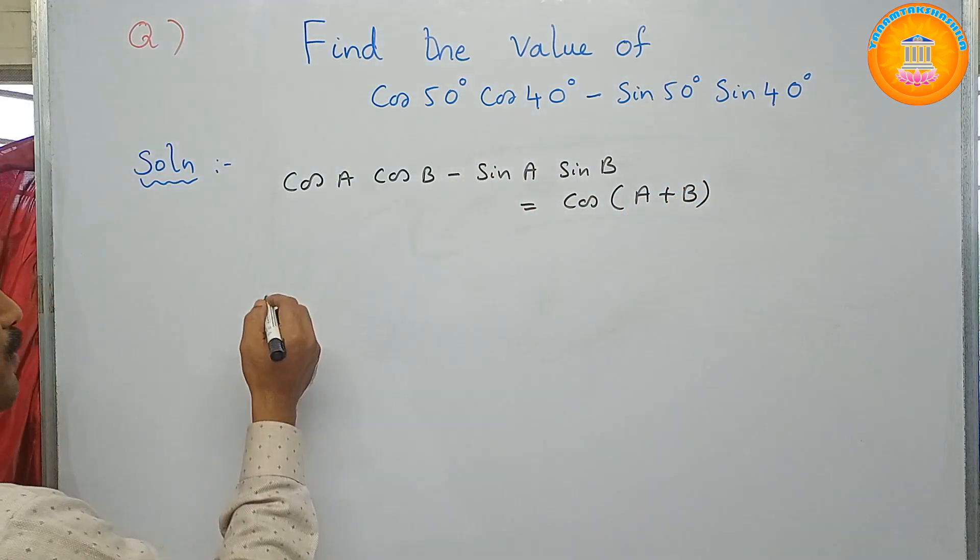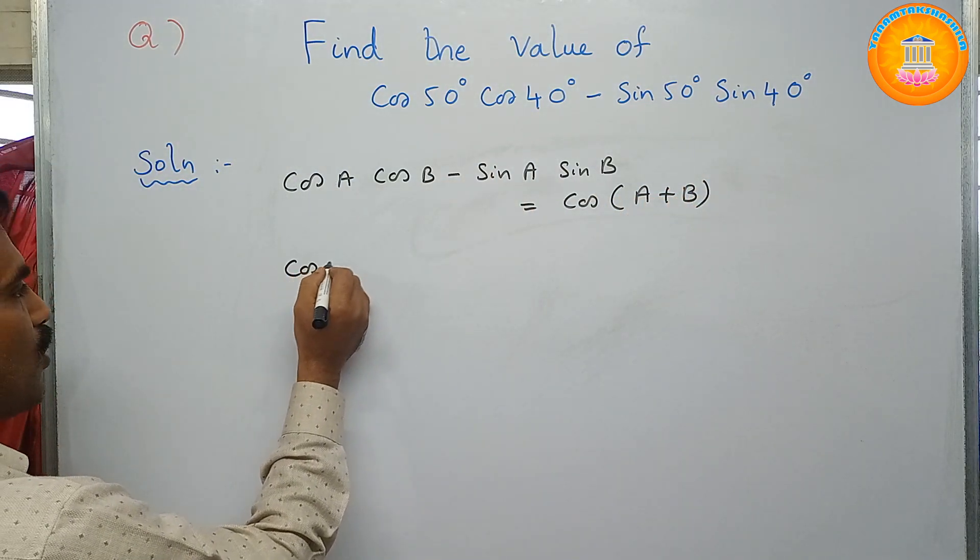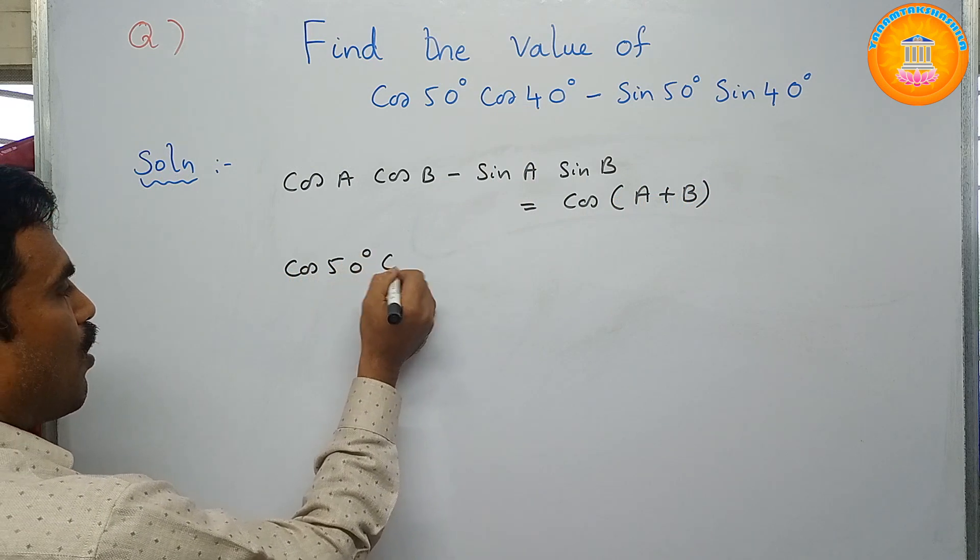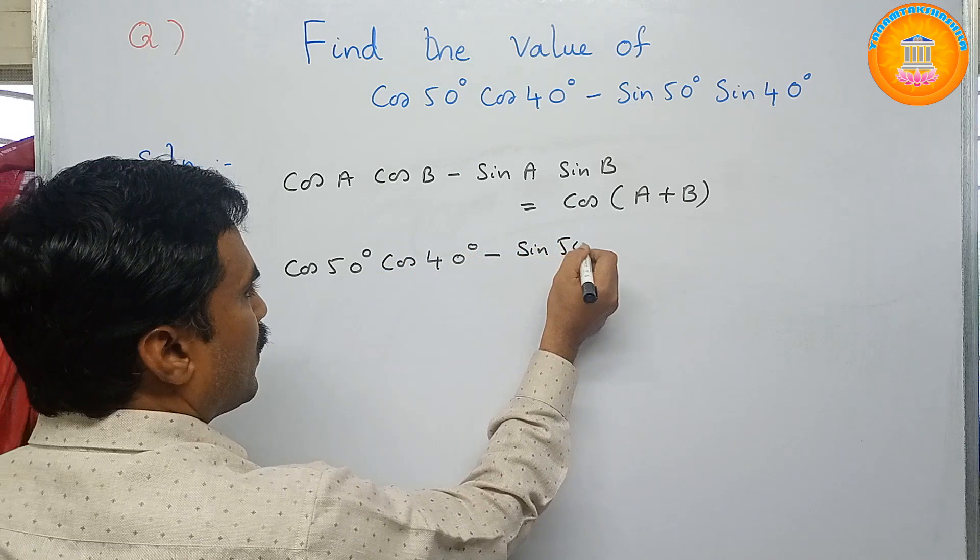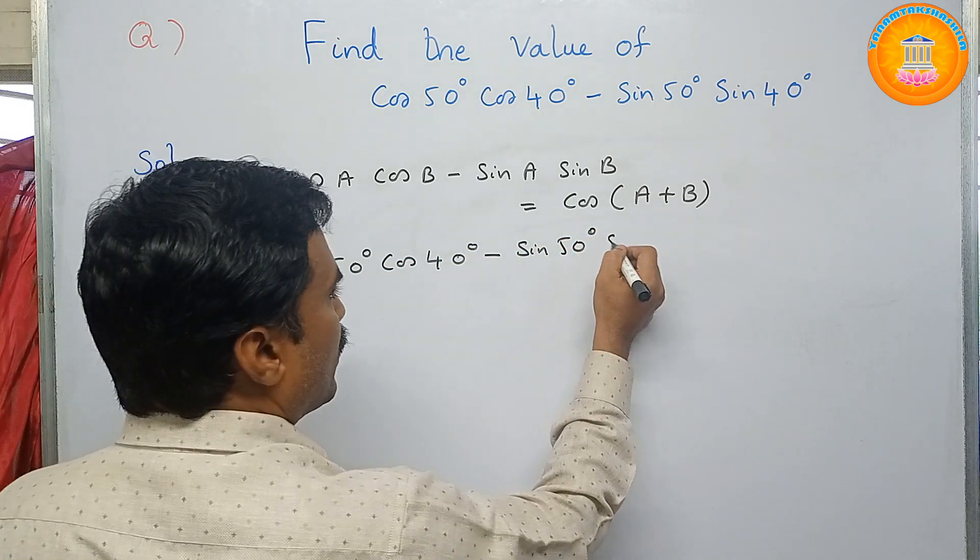Now, write the given problem here. So, cos 50 cos 40 minus sin 50 sin 40.